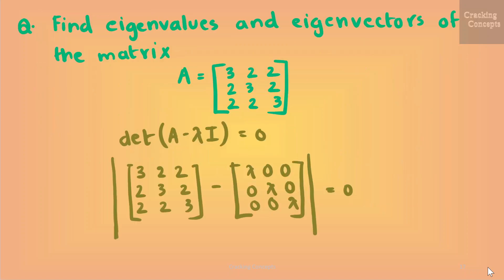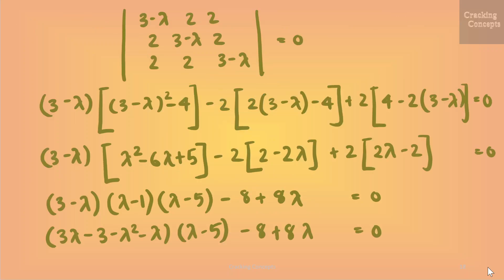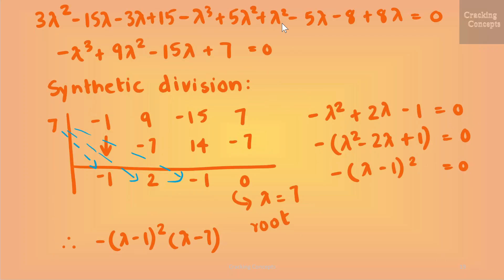Now we will solve the problem where we find the eigenvalues and eigenvectors of a 3×3 matrix. We start with finding the characteristic polynomial by taking det(A − λI) = 0. On substituting the corresponding values, we get a third-degree polynomial. We will use the synthetic division method to check whether 7 is a root of this polynomial.